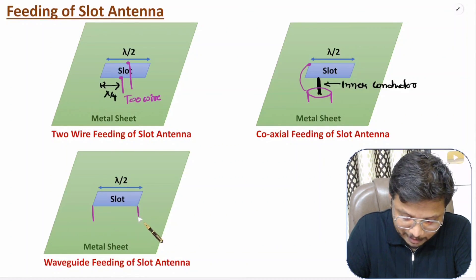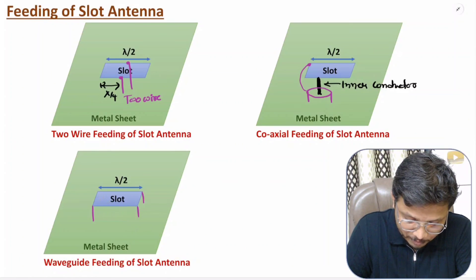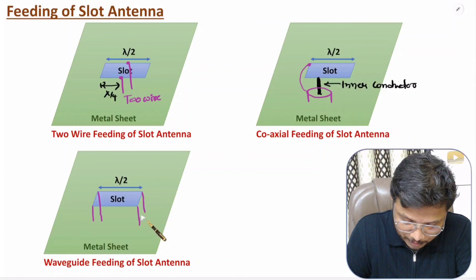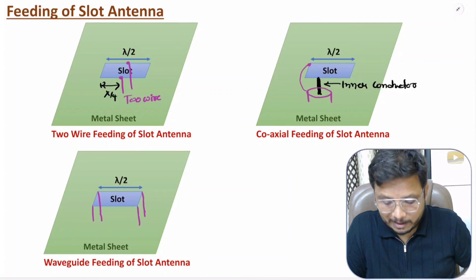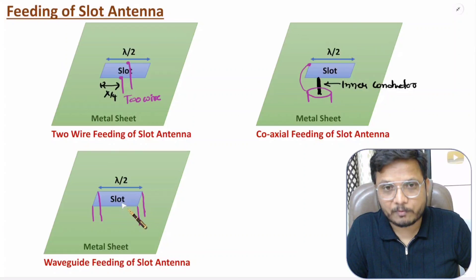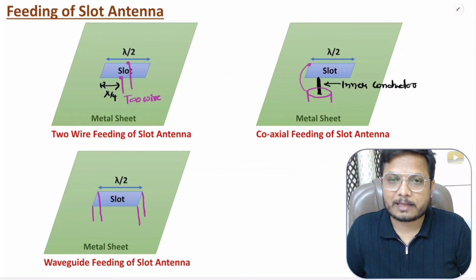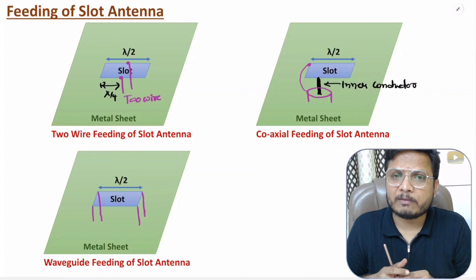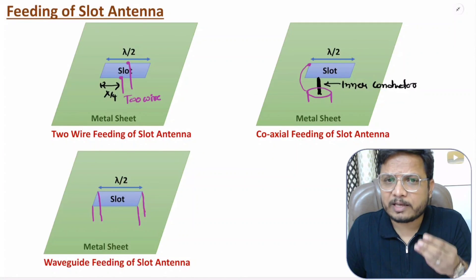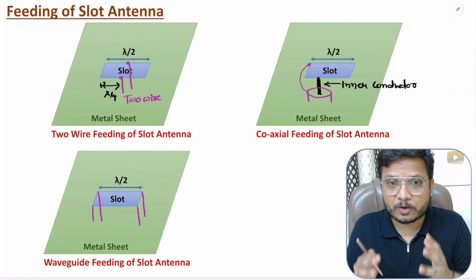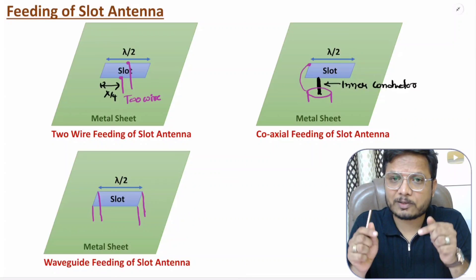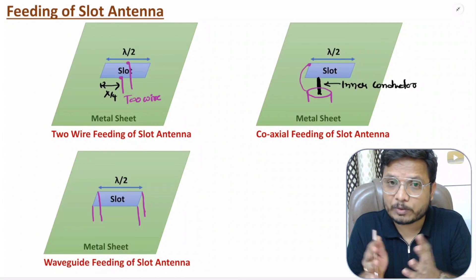The third mechanism is waveguide feeding. Here we have a rectangular waveguide, and by connecting the waveguide to the slot we can feed the slot antenna. There are a few more feeding mechanisms, but these three — two-wire, coaxial, and waveguide — are the most popular feeding mechanisms used with slot antenna. I hope you enjoyed this session. If you have anything to share, note it in the comment section. Thank you for watching.